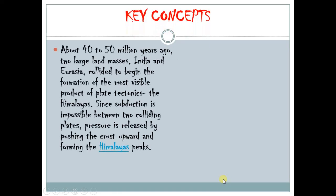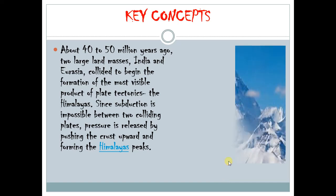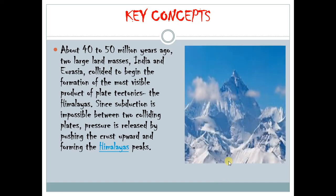About 40 to 50 million years ago, two large land masses — India and Eurasia — collided to begin the formation of the most visible product of plate tectonics: the Himalayas. Since subduction is impossible between two colliding continental plates, pressure is released by pushing the crust upward and forming the Himalayan peaks, as we can see in the picture. Now we understand why mountain ranges are being formed as the plates move toward each other.